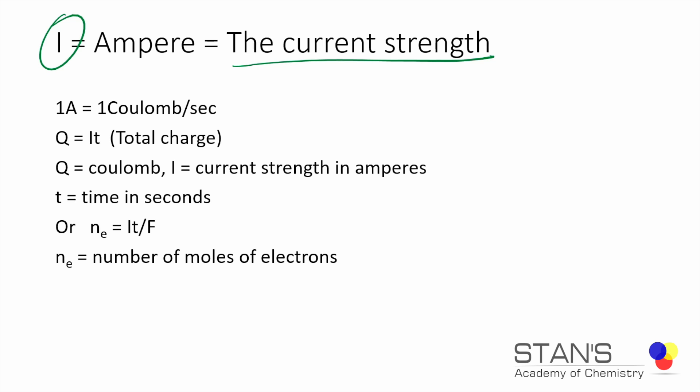When we say we have 1A, a current strength of one ampere, what we mean is one coulomb, a charge of one coulomb is passing through the circuit every second. So if you have two amperes, that equals two coulombs in one second. A five ampere would be a higher current strength because we have five coulombs flowing through a circuit in one second.